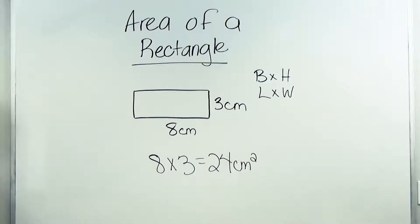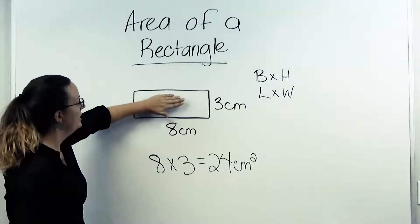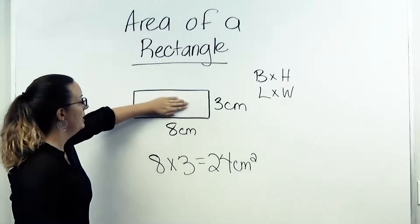To find the area of a rectangle, you need to have the length and the width, or you can also call it the base and the height. So you need both dimensions in order to multiply those together to give you the area, or the space that takes up the inside of the rectangle.